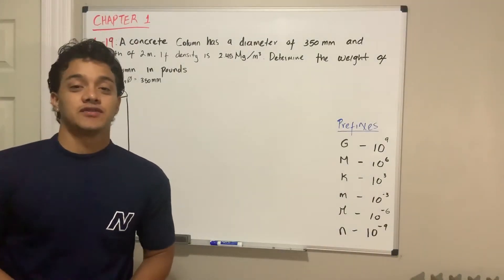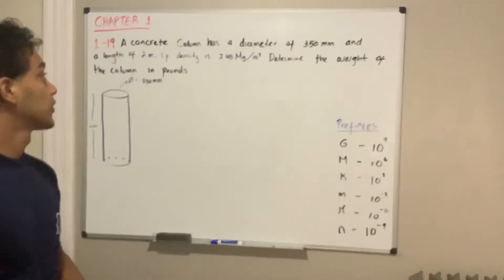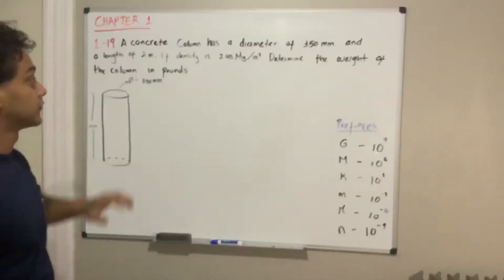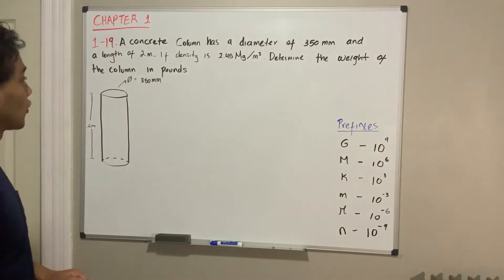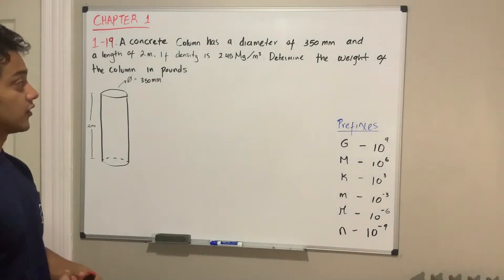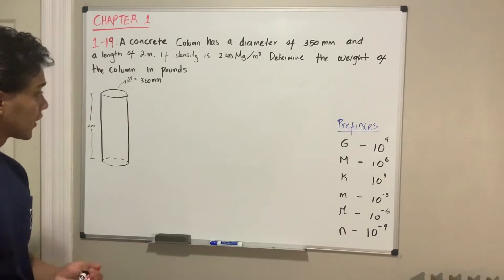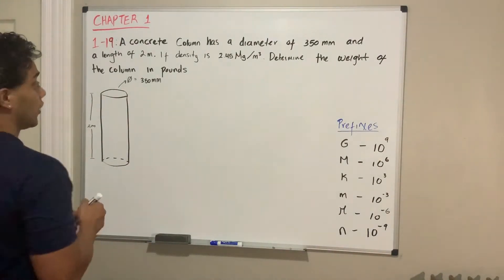Welcome back to statics. Today we're going to do example 1.19 from the book. A concrete column has a diameter of 350 millimeters and a length of 2 meters. If the density is 2.45 megagrams per cubic meter, determine the weight of the column in pounds.